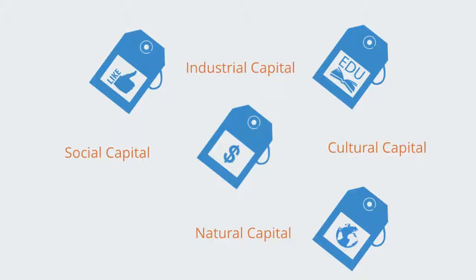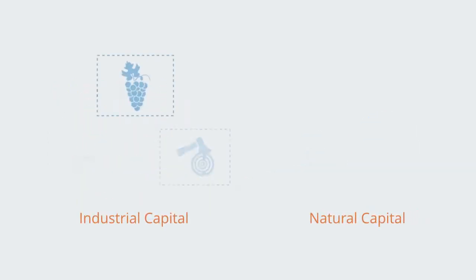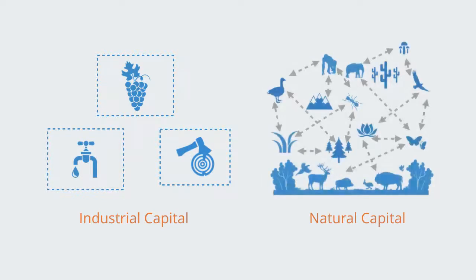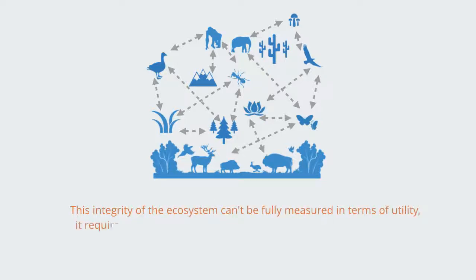Completing the process of industrialization means people's values change subtly but importantly. At this stage in economic development, the scarcity is no longer in technology, capital, and labor — it is increasingly in natural capital. The value shifts from the derivatives of ecosystems to the functional integrity of those ecosystems. This integrity of the ecosystem can't be fully measured in terms of utility; it requires a different kind of capital — what can be called natural capital.